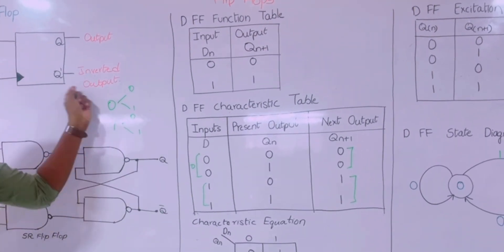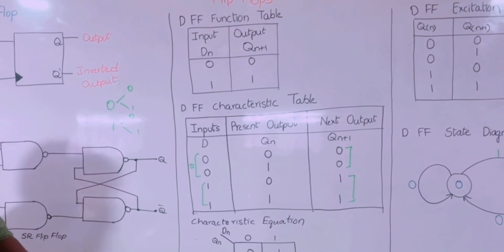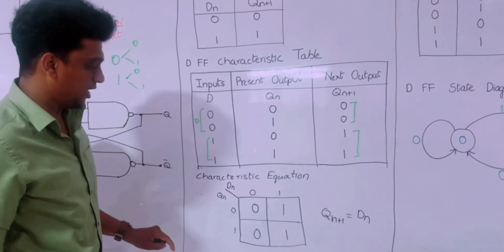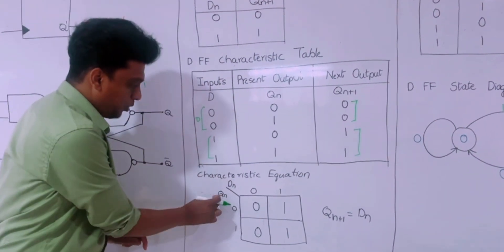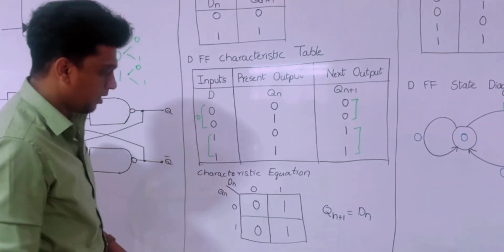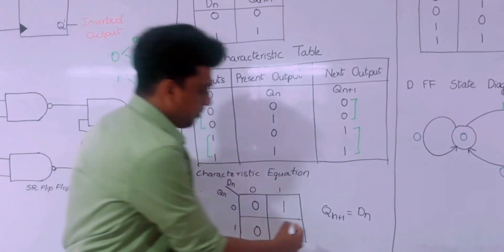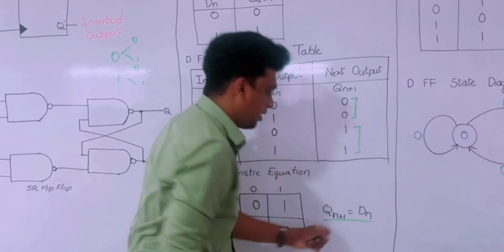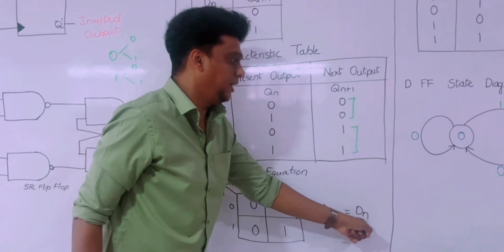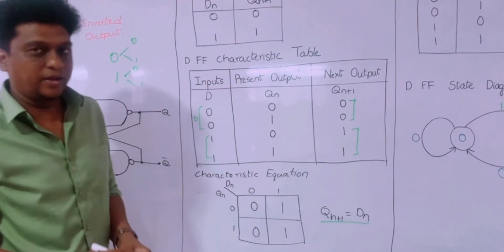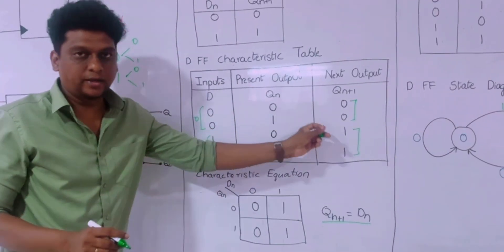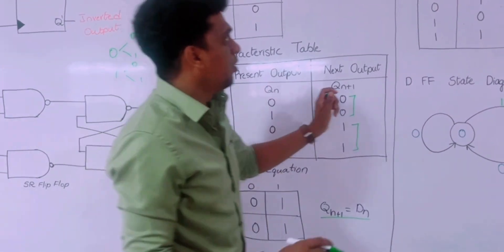Then comes the characteristic equation — no simplification. From Qn and this data, after simplifying, we are getting that Qn+1, the next state, is equal to Dn. So whatever we write into the data, that we can get in the next state.